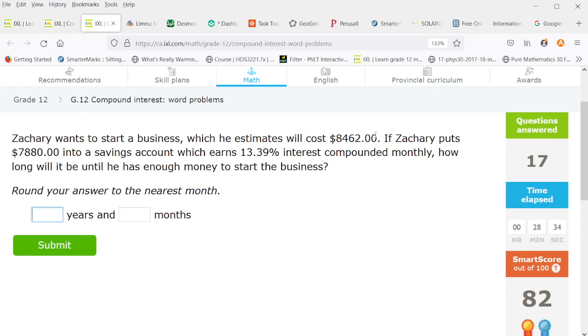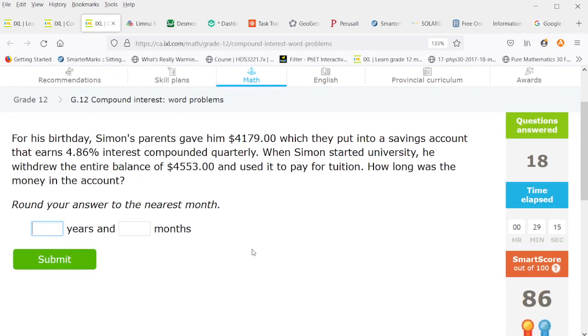So this is compounded monthly, we've had no issues with those. So log 8462 divided by 7880, divide that by the log of 1 plus 0.1339 over 12. All right and there have been 6.42 periods. So he is going to have to wait zero years and six months. It's actually like 6.42 so it's going to be more like seven months. So let's see if the rounding on Desmos does a better job here.